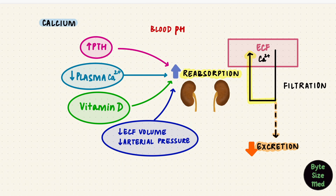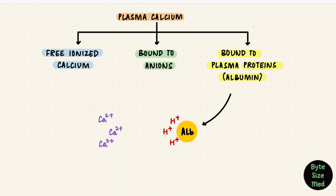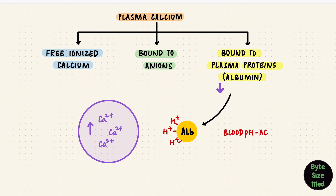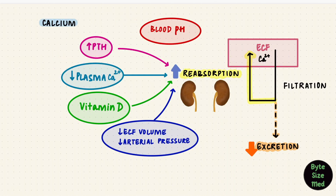The pH of blood can also affect calcium handling. Hydrogen ions and calcium ions compete for binding to plasma proteins like albumin. If more hydrogen ions bind to albumin, there's less space for calcium, increasing the amount of filterable calcium. This happens when the pH is acidic. The reverse occurs when blood pH is high and hydrogen ions are low — more calcium is bound to albumin, lowering free calcium, and thus the kidney reabsorbs more calcium when blood pH is high.